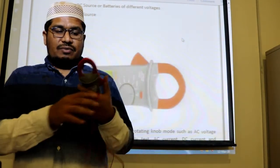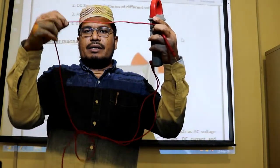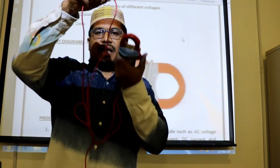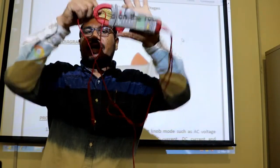So wherever there is a current in the wire, wherever you want to measure, just open this clamp like this and press like this and you can measure the current directly. How it will work?